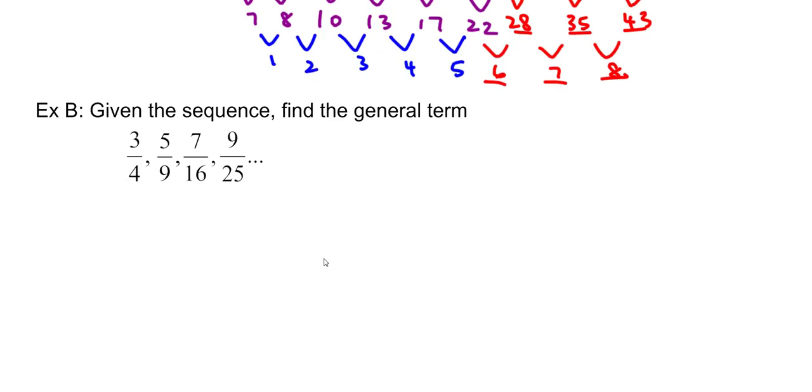Example B: This is in fractional form, so it's really tempting to treat it as a decimal. But actually, if it's a fraction, it might have a different definition for the top than for the bottom. And I can see in this case, 3, 5, 7, 9 is a sequence, and 4, 9, 16, 25 is a sequence.